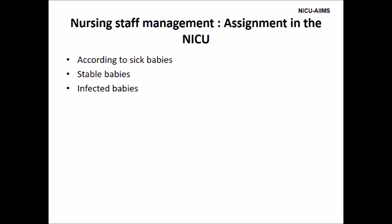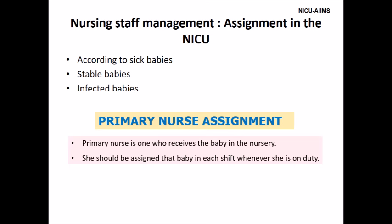Nursing staff management: babies should be assigned to nurses based on the total number of babies — sick and stable — and the number of nurses present on duty each day. Assignment is done according to the condition of the baby, keeping in mind the concept of primary nursing. The primary nurse is one who receives the baby in the nursery and should be assigned that baby in each shift whenever she is on duty.